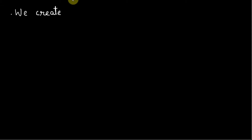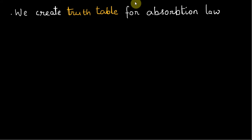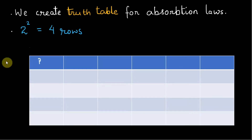First, we create a truth table for the absorption law. There are two variables, so we will have 2 raised to 2 equals 4 rows in the truth table. The columns are P, Q, P or Q, P and Q, P or (P and Q), and finally P and (P or Q).